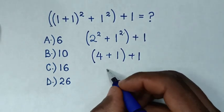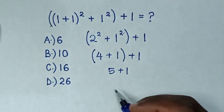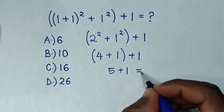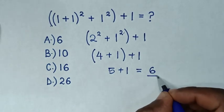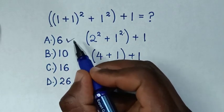So we open the brackets. It will be 5 plus 1, which equals 6. This is our final answer. Selecting the multiple choice, it is A.